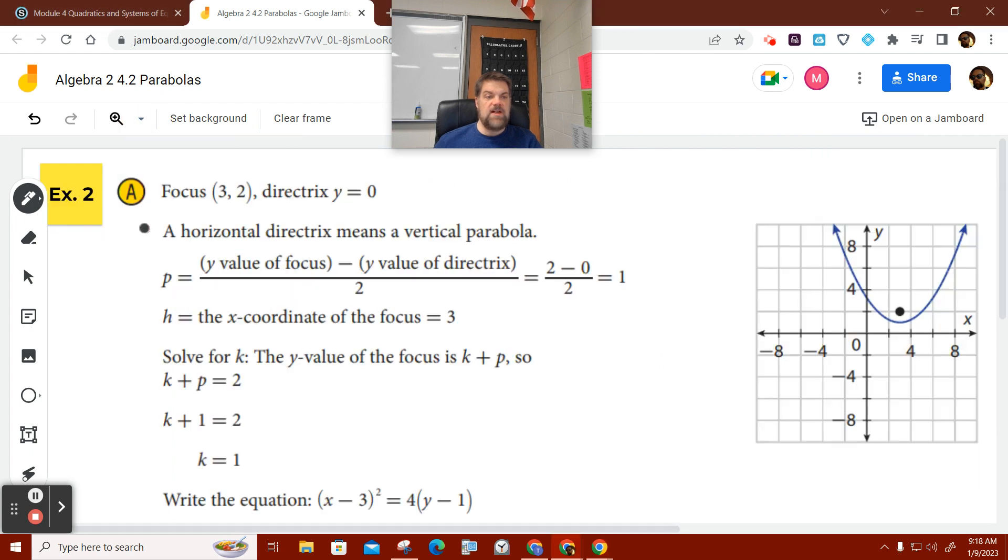So if I look at this, they're going to give us some information. It says that my focus is three comma two. So my focus is three comma two. And the directrix is Y equals zero. So they give us a graph as well. So this is a vertical parabola. Well, how do I find the P value? Well, the P value, remember that this represents an X value and this represents a Y value. So my Y value of the focus is two minus the Y value of the directrix, which is zero. So two minus zero divided by two is one. So I have P equals one.